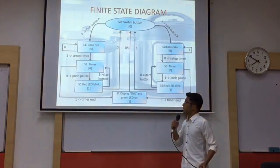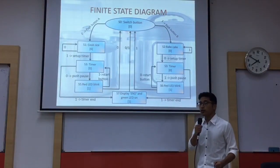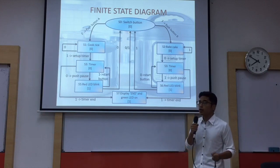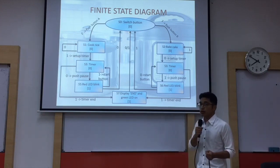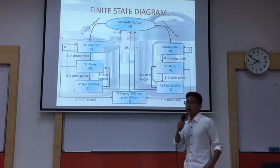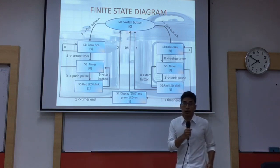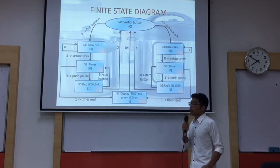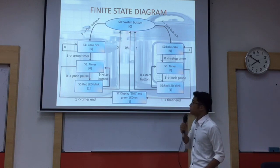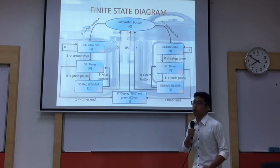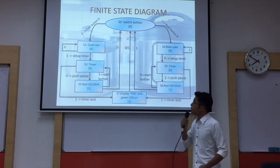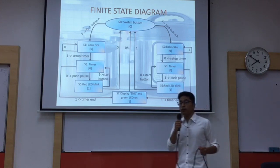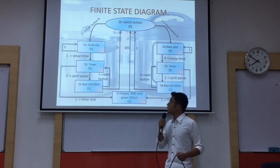Now we move to the finite state diagram. For the first step, it is the switch button. If you turn on the switch button, you can choose either to push button A or push button B. If you push button A, the input will be zero, and if you push button B, the input will be one, which is high. If you push button A, it will go to the function of cooking the rice.